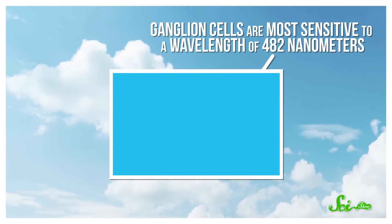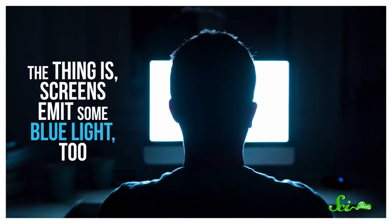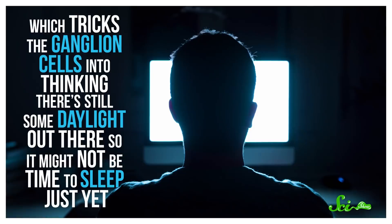But these ganglion cells are more sensitive to certain colors of light than others. Specifically, they are most sensitive to a wavelength of 482 nanometers, which is a sort of turquoise-y blue that is a big component of daylight. The thing is, screens emit some blue light too, which tricks the ganglion cells into thinking there's still some daylight out there, so it might not be time to sleep just yet.